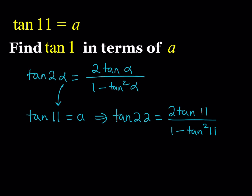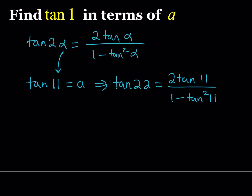Now we can replace tangent 11 with A and find tangent 22 in terms of A. So tangent 22 is going to be 2A divided by 1 minus A squared. That's the value of tangent 22 in terms of A.